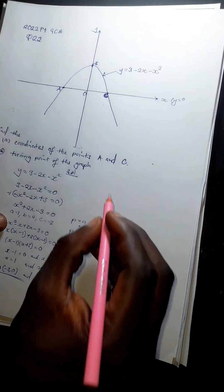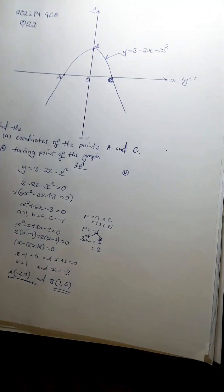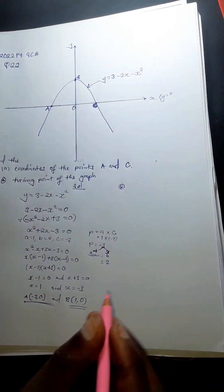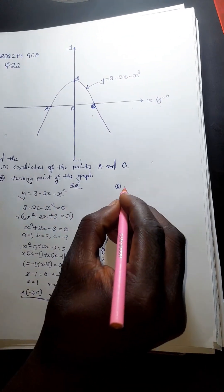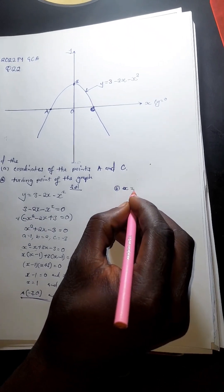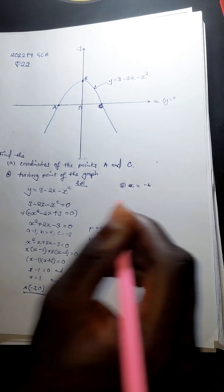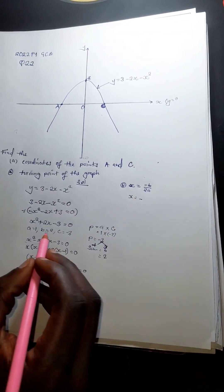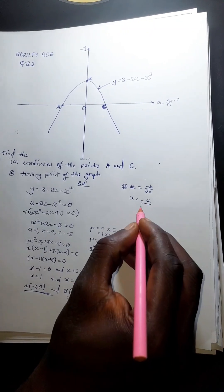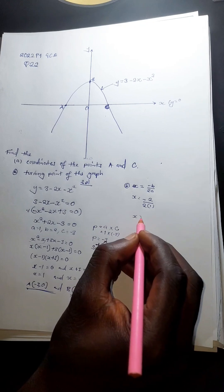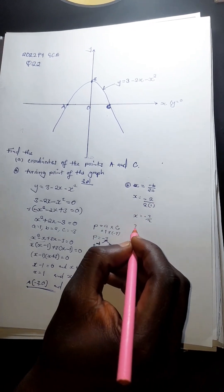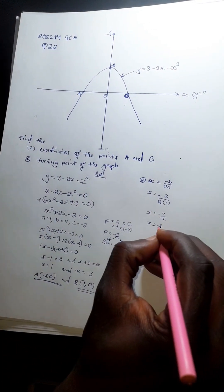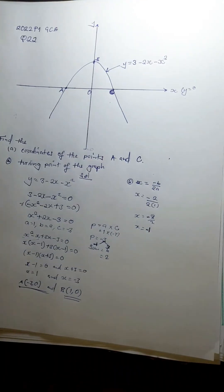For part b, we find the coordinates of the turning point of the graph. We use the formula x = −b / 2a. Here b = 2, a = 1, so x = −2 / (2 × 1) = −2/2 = −1. The x-coordinate of the turning point is −1.